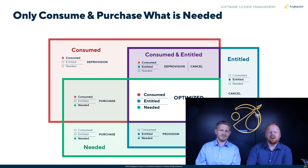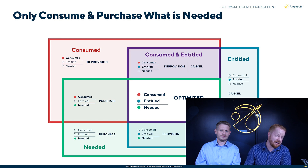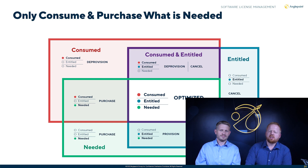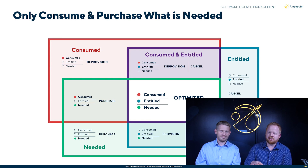Looking at what we're consuming and what we're entitled to use but don't actually need — if we don't need it but we're consuming it, let's deprovision or uninstall that software as well. The real goal is to align what we're consuming, what we're entitled to use, and what we need — all overlapping each other. That's when we're in an optimized state.